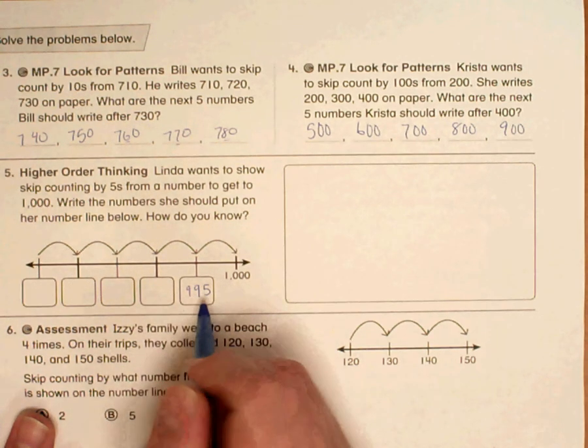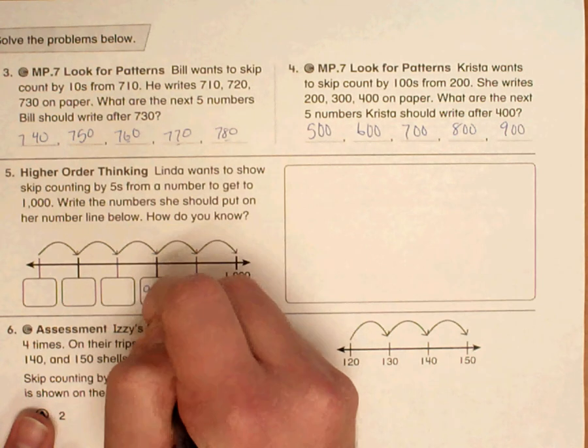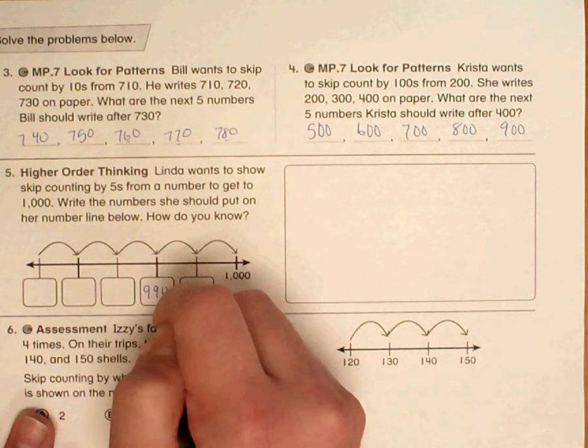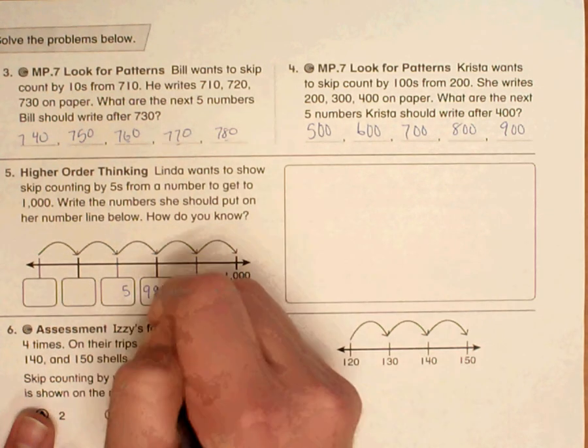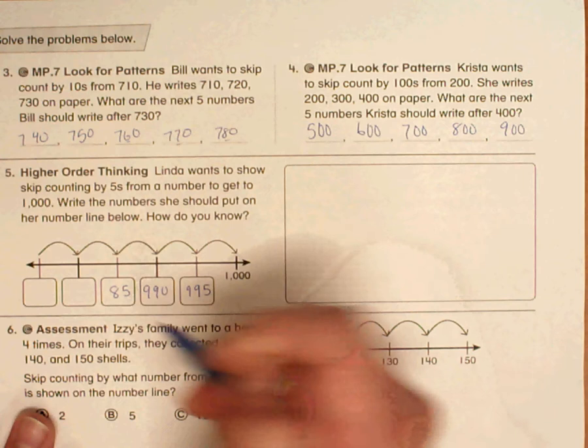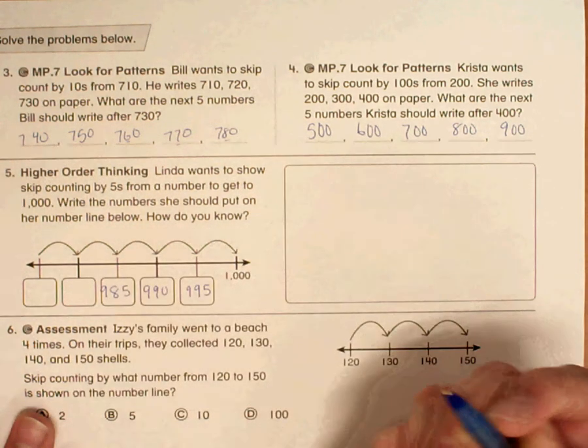Now from 995 subtract 5, we get 990. Subtract 5, that 1's place will be a 5. I have to bring that 10's place down 1, so that would be 85. And the 100's place remains the same.